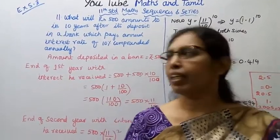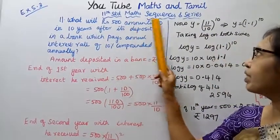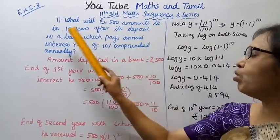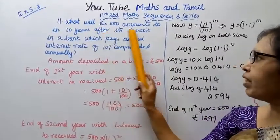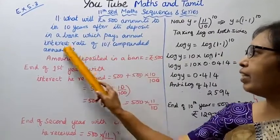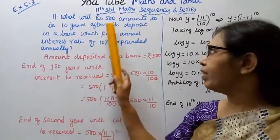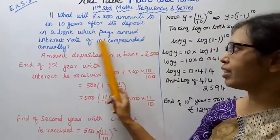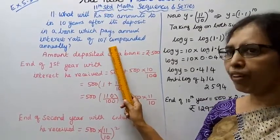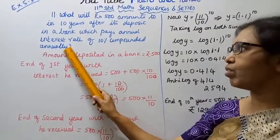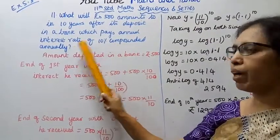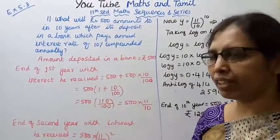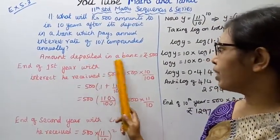Hello students, welcome to Mags and Tamil channel. Today we will look at sequences and series, Exercise 5.3. What will rupees 500 amount to in 10 years after its deposit in a bank which pays an annual interest rate of 10% compounded annually? The deposit is 500 rupees at 10% compounded annually — this is a compounded interest problem from the 8th standard level. After 10 years, we need to find the amount.